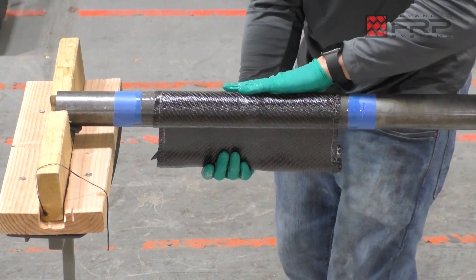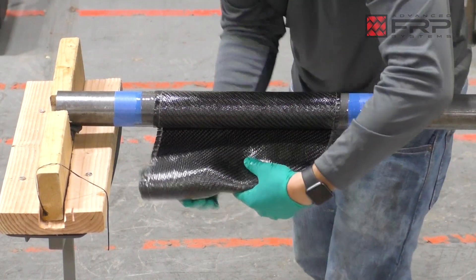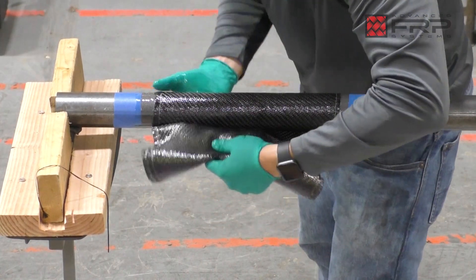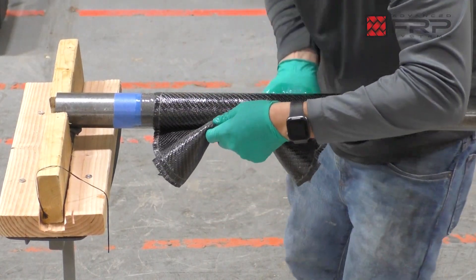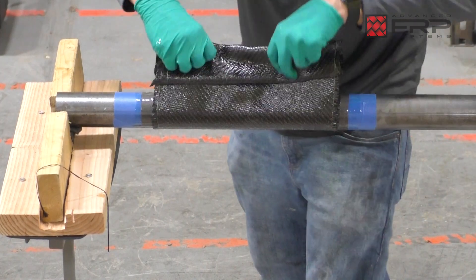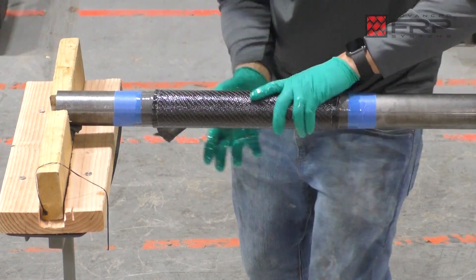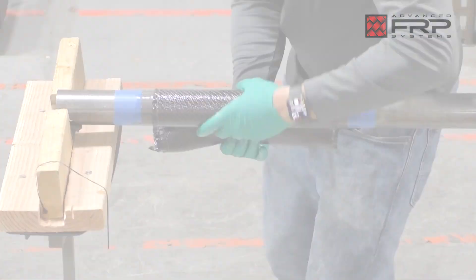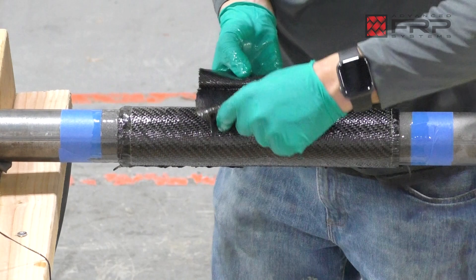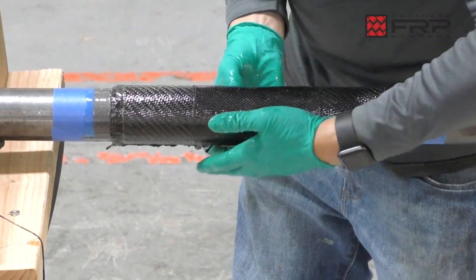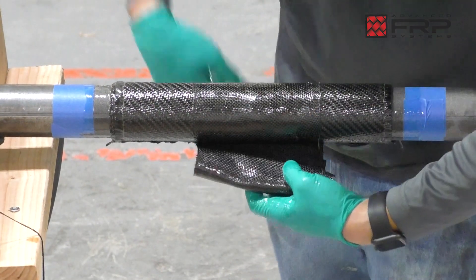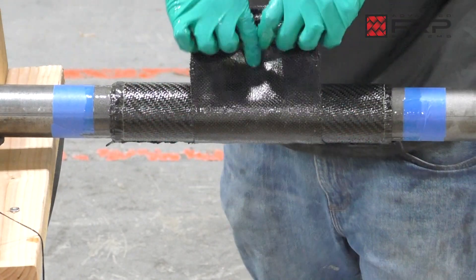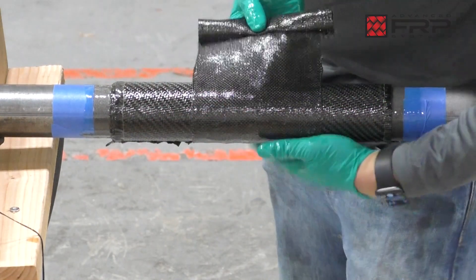As you wrap, use your hands to massage the fabric against the pipe to remove air bubbles and ensure that the fabric lays flat against the pipe. Because there should be a minimum of six layers of carbon fiber, take the smaller piece of carbon fiber labeled CF300BD and center it over the repair area. Wrap in the same direction as the previous wrap and apply the new fabric while massaging out any air bubbles.